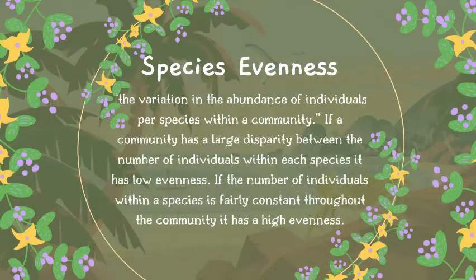Second is species evenness — the variation in the abundance of individuals per species within a community. If a community has a large disparity between the number of individuals within its species, it has low evenness. If the number of individuals within species is fairly constant throughout the community, it has high evenness.